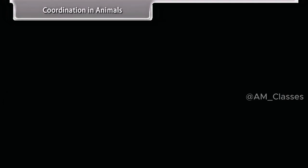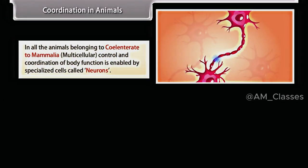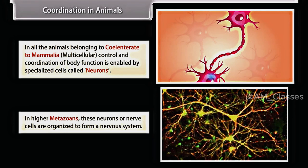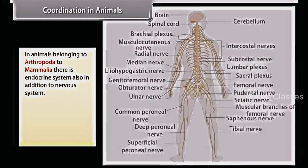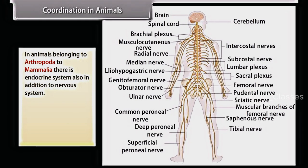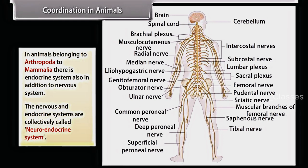In all animals belonging to coelenterata to mammalia, multicellular control and coordination of body functions is enabled by specialized cells called neurons. In higher metazoans, these neurons or nerve cells are organized to form a nervous system. In animals belonging to arthropoda to mammalia, there is an endocrine system also in addition to the nervous system. The nervous and endocrine systems are collectively called the neuroendocrine system.